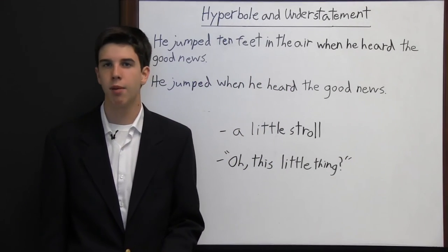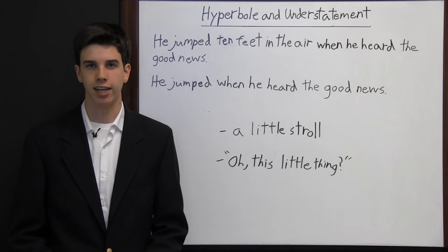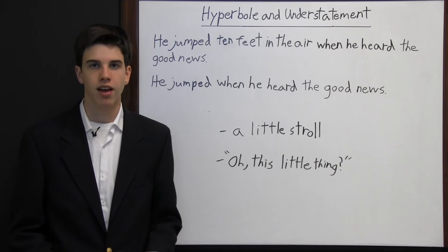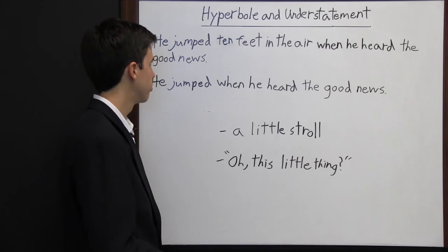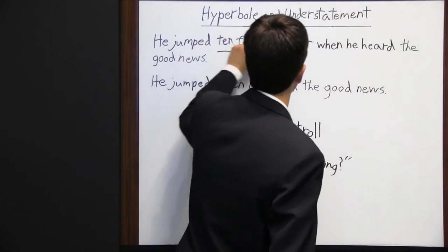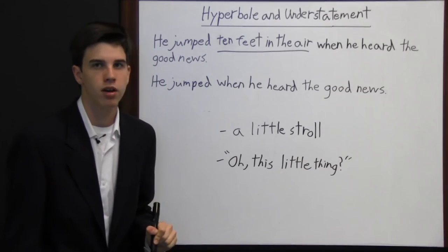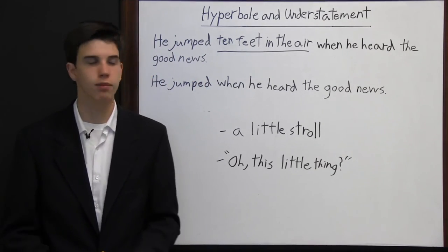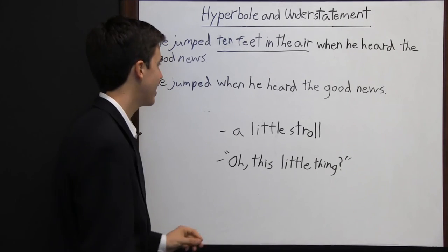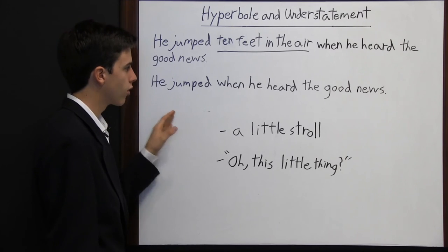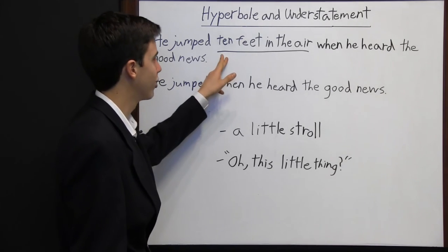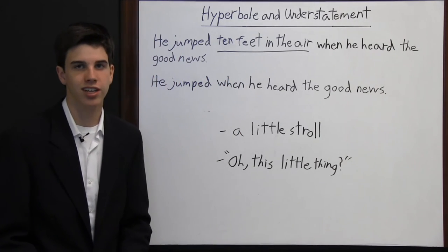The understatement and the hyperbole are opposite literary techniques. The hyperbole is an obvious exaggeration. An example: "He jumped 10 feet in the air when he heard the good news." No human being actually has the ability to jump 10 feet in the air, but here the writer is conveying to the reader the strong emotion this person is feeling. Compare that to simply saying "He jumped when he heard the good news" — the reader would just think, okay, this person is excited. But with the hyperbole, the reader really gets an idea of how excited the person is.